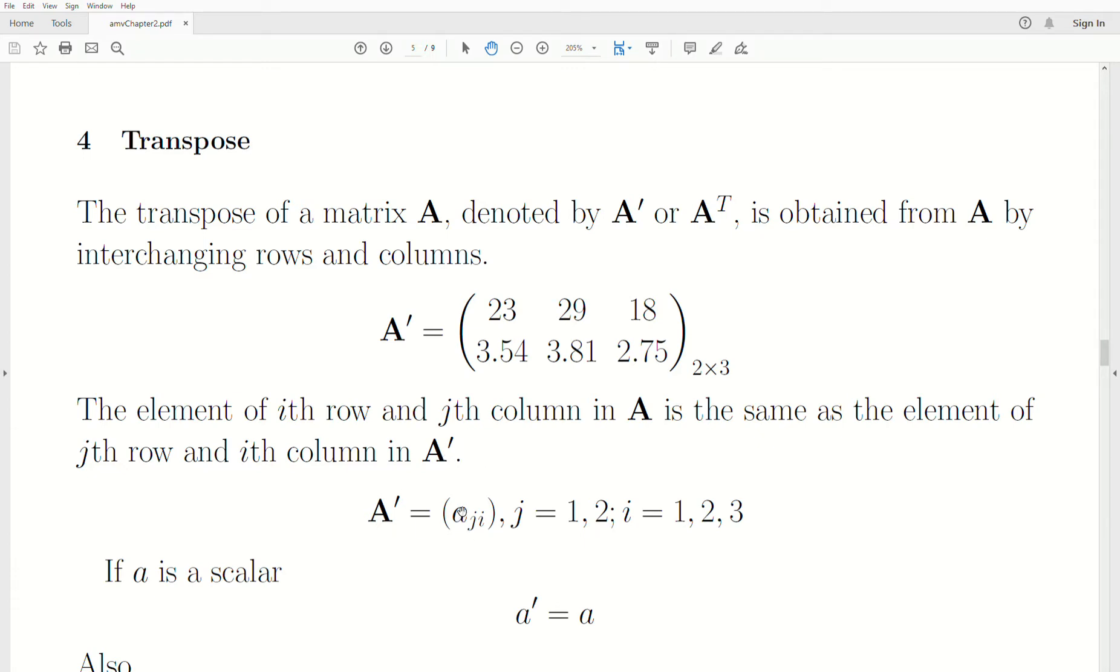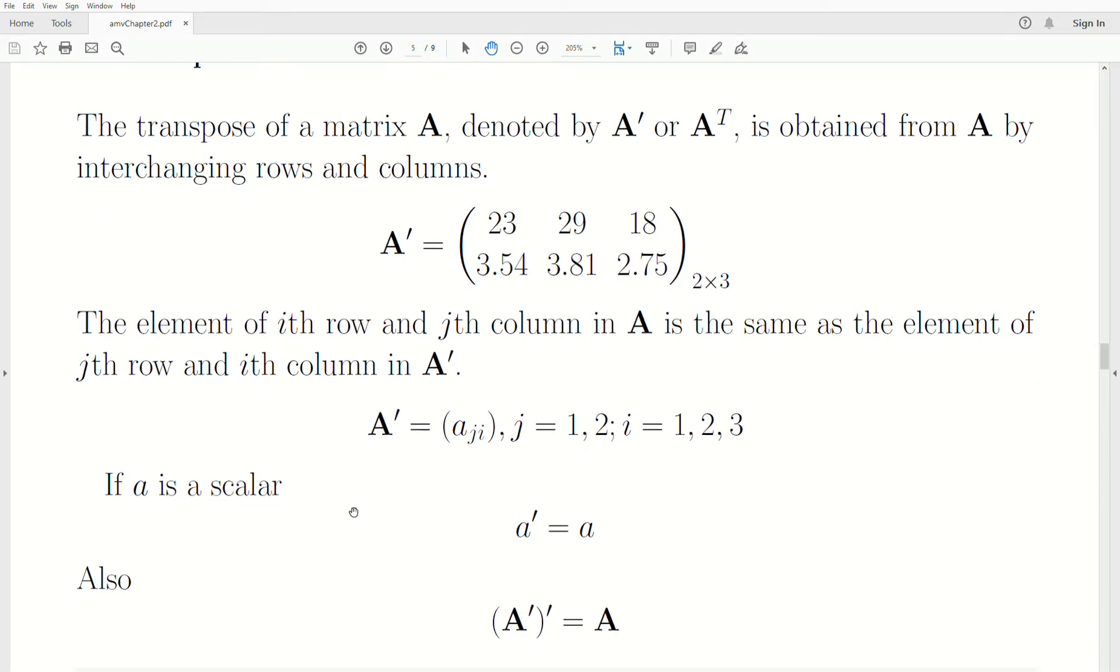So A transpose is A sub ji, where j goes from 1 to 2 and i goes from 1 to 3. And when we're talking about matrix A, we'd say Aij. So the indices reversed. And that's essentially what we're doing with the transpose.